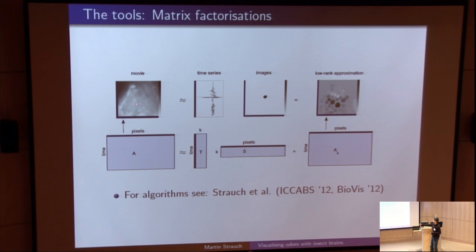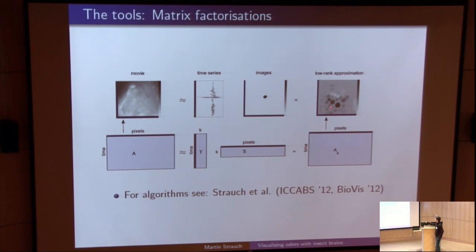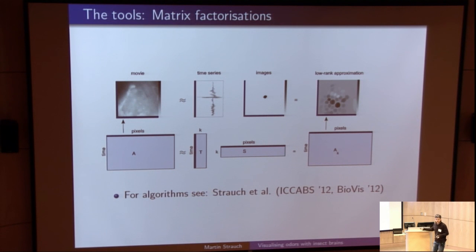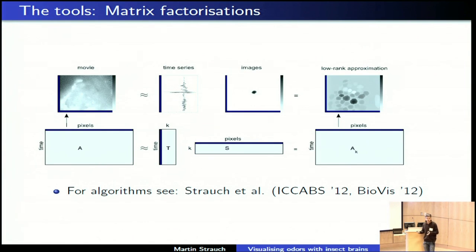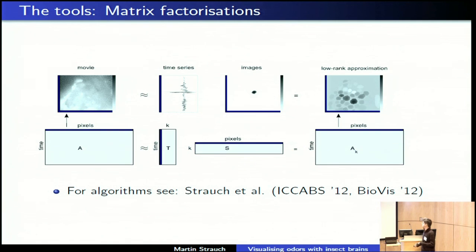That is basically the transition from an original image from the movie to the low-rank approximation of the movie. As you can see, something has been lost — this is certainly an approximation — but the point is we've discarded mostly noise, and this image is much clearer. We can see the glomeruli that respond to the odours and extract the odour response patterns. It's a bit like principal component analysis (PCA), using few factors to account for most of the variance. We use non-negativity and sparsity constraints on the factorization. The bottom line is we construct a low-rank approximation of the movie to get something usable for visualization.